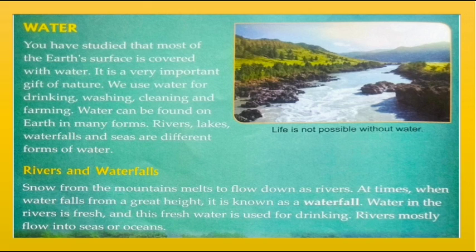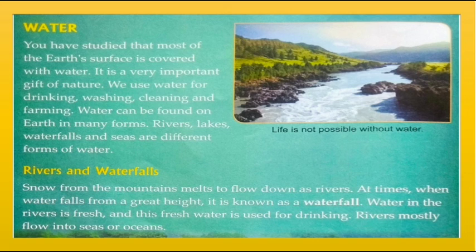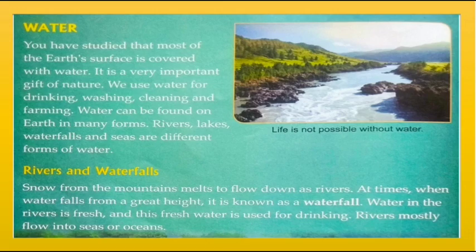Rivers and waterfalls: snow from the mountains melts to flow down as rivers. When water falls from a great height, it is known as a waterfall. Water in rivers is fresh, and this fresh water is used for drinking. Rivers mostly flow into seas or oceans.